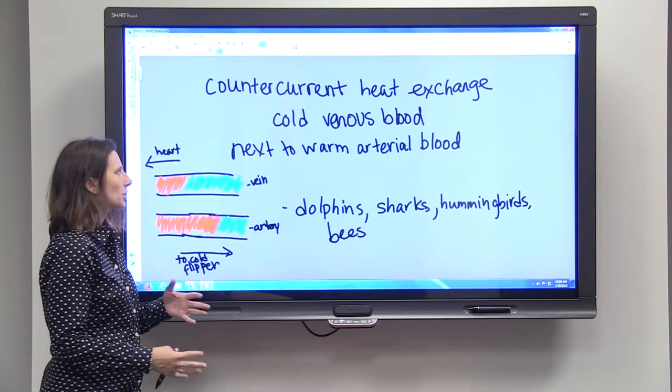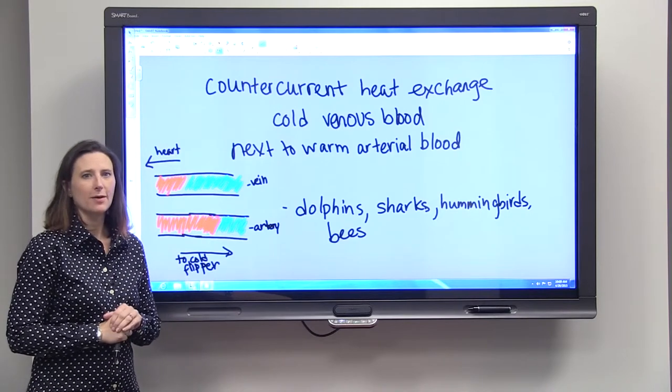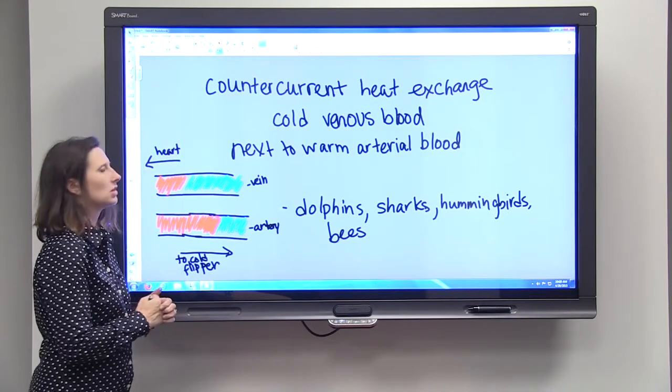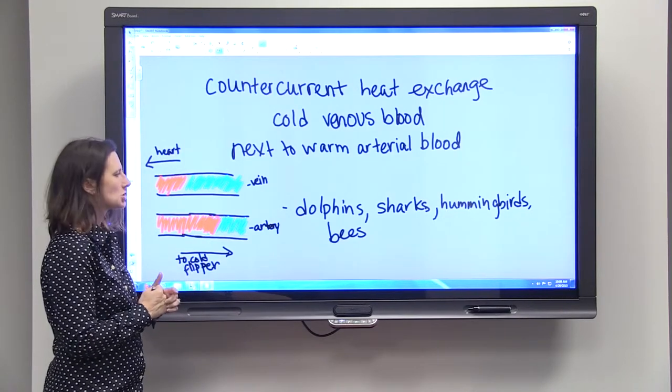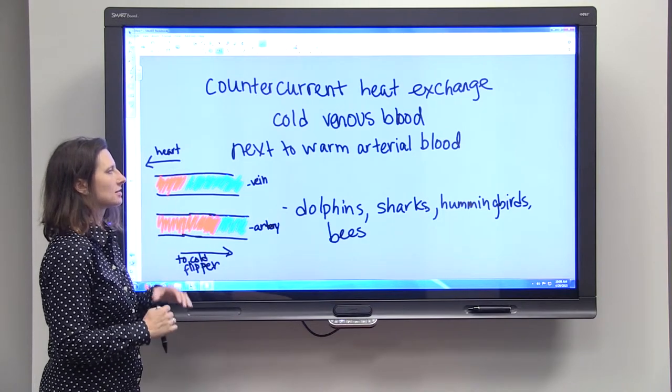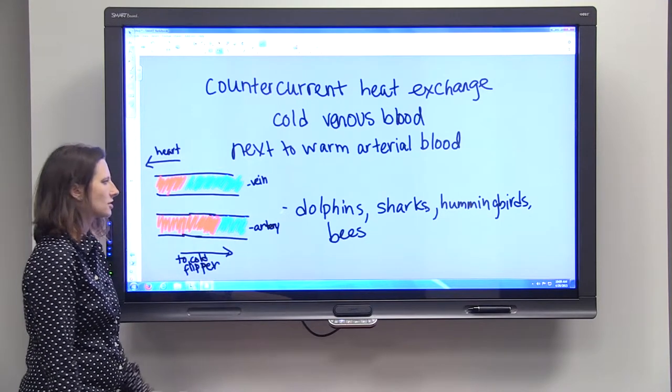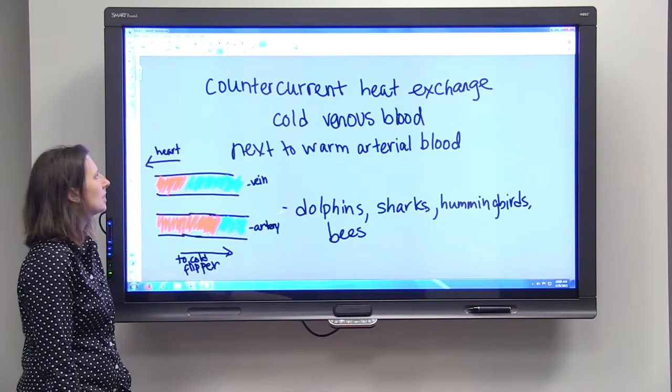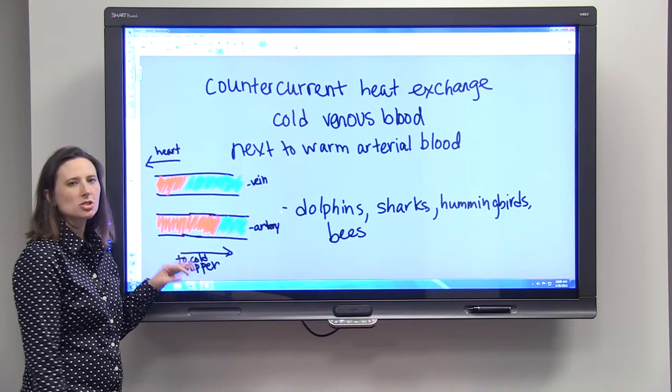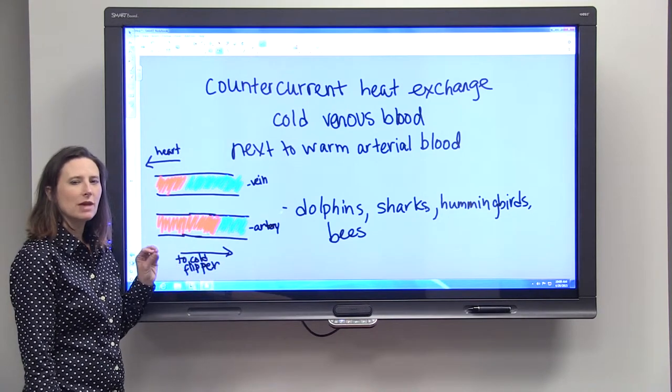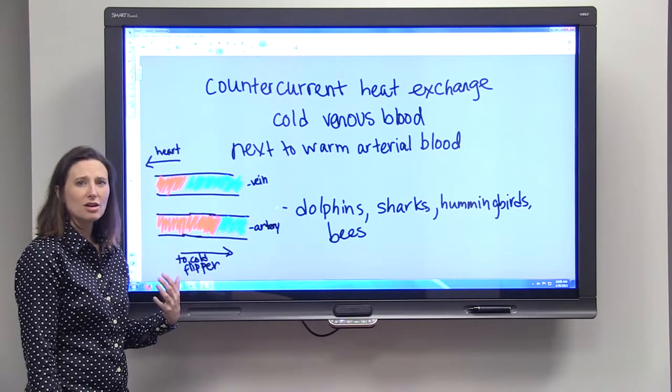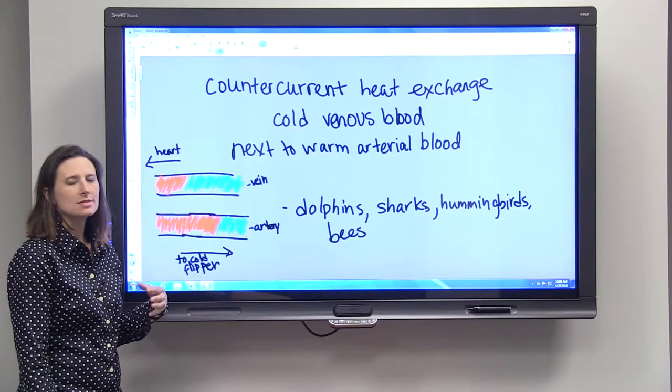Another type of thermoregulation or a system that helps in thermoregulation is called counter current heat exchange. It happens only in some animals, but here's an example of some animals it does happen in: dolphins, sharks, hummingbirds, and bees. Counter current heat exchange is a way to make sure that the heart and the internal organs stay warm.